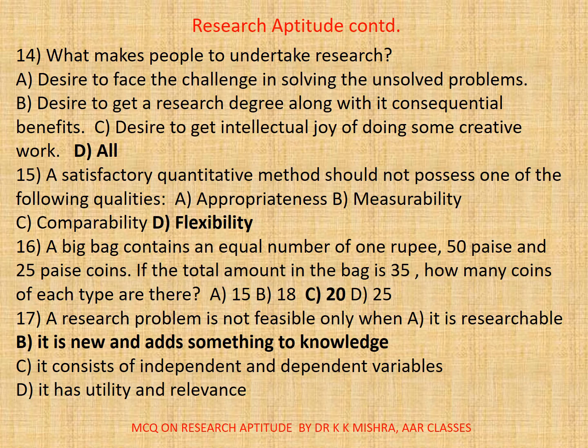Question sixteen: A bag contains an equal number of one rupee, 50 paise, and 25 paise coins. If the total amount in the bag is 35, how many coins of each type are there? If you calculate it, you will find the correct option is C: 20.